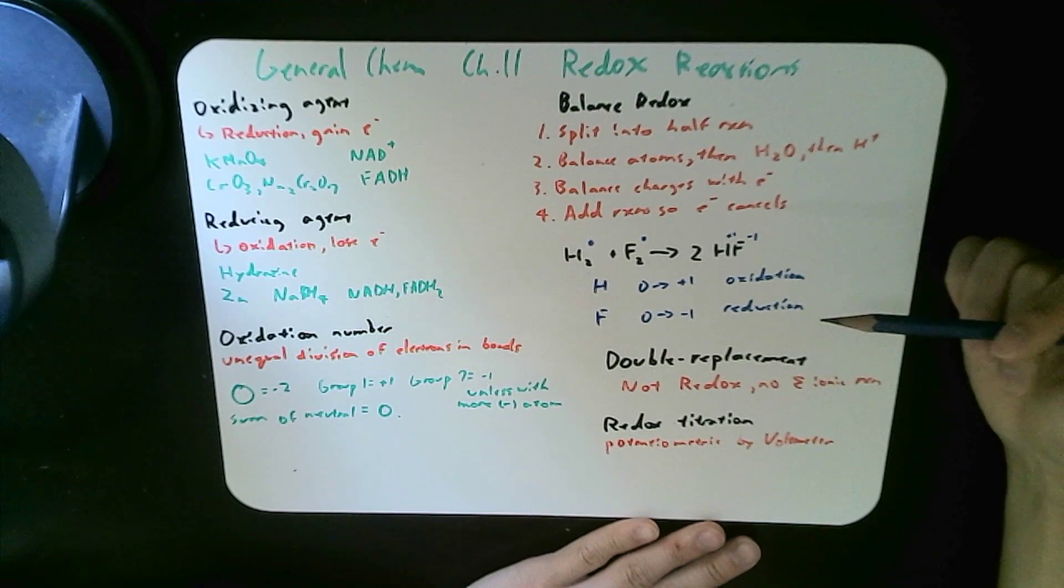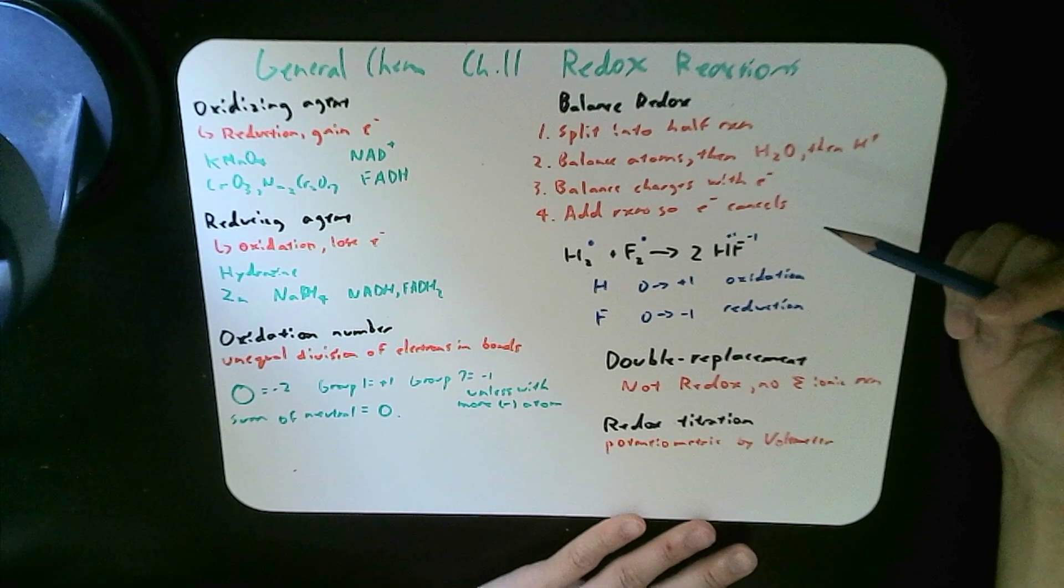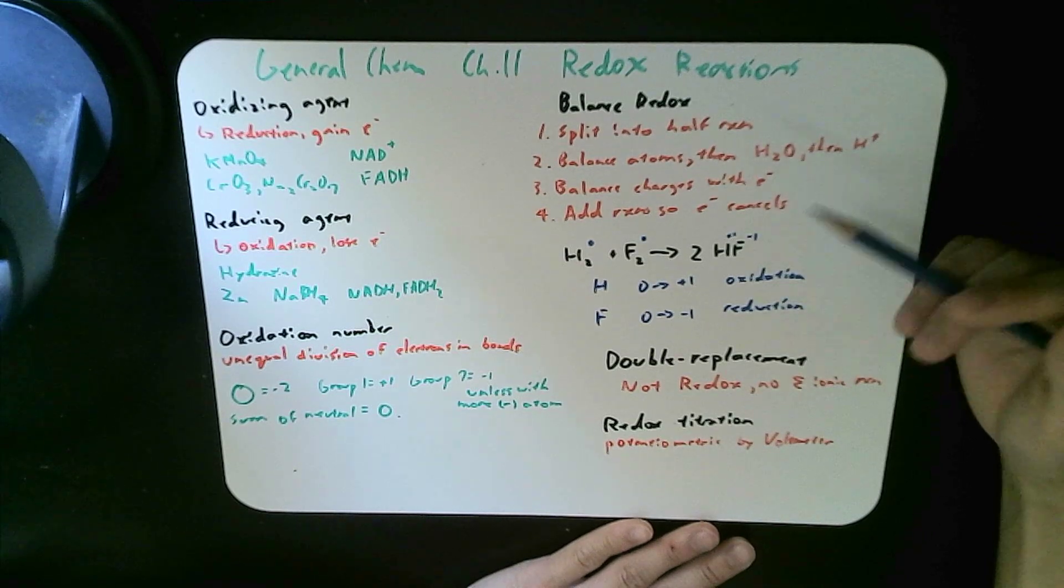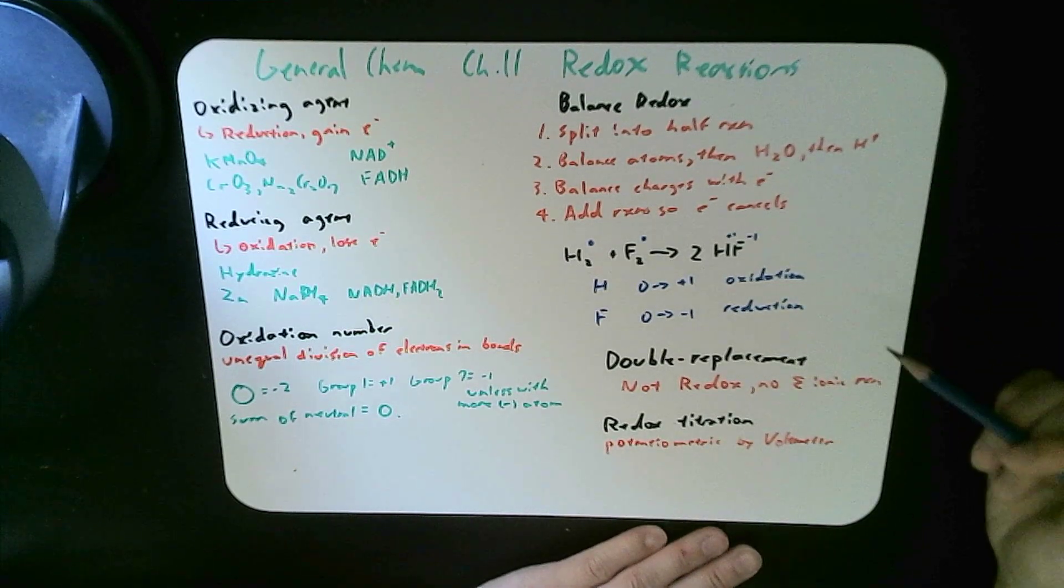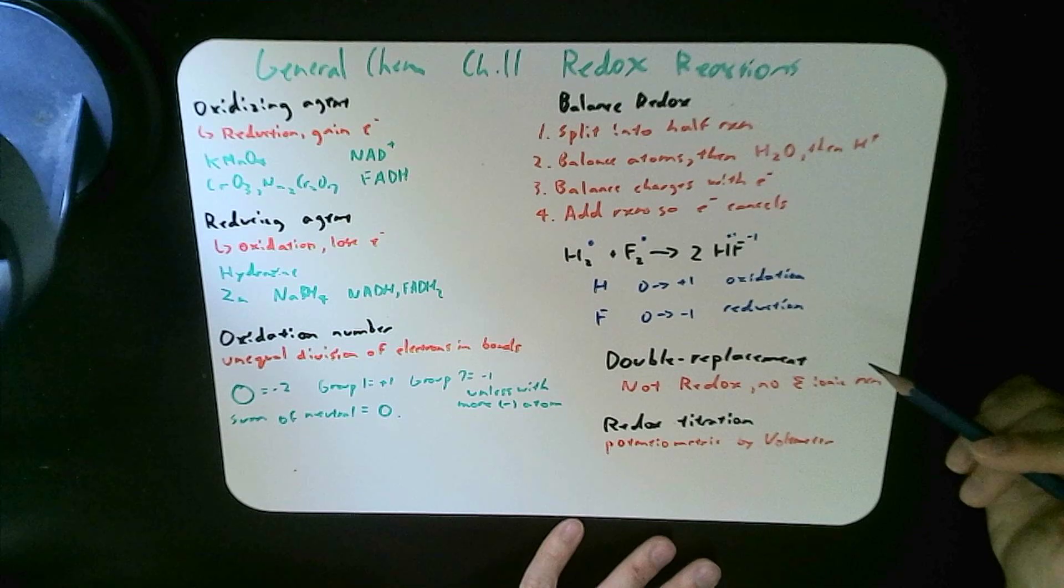Double replacement is not a redox reaction, because they simply just switch spots, and there's no net reaction, or an electron gain or loss.